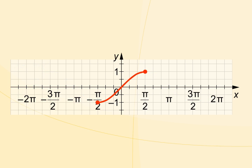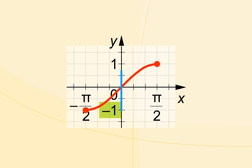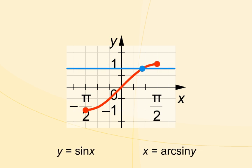Note that the range is still the closed interval from negative 1 to 1. As this function is one-to-one, the inverse function can be found.